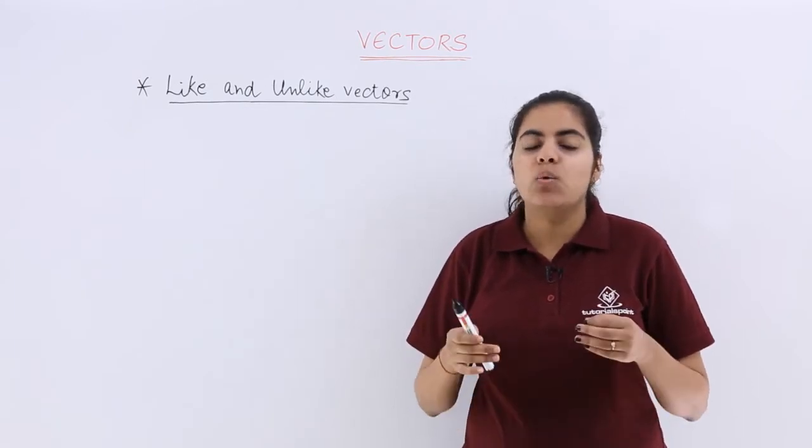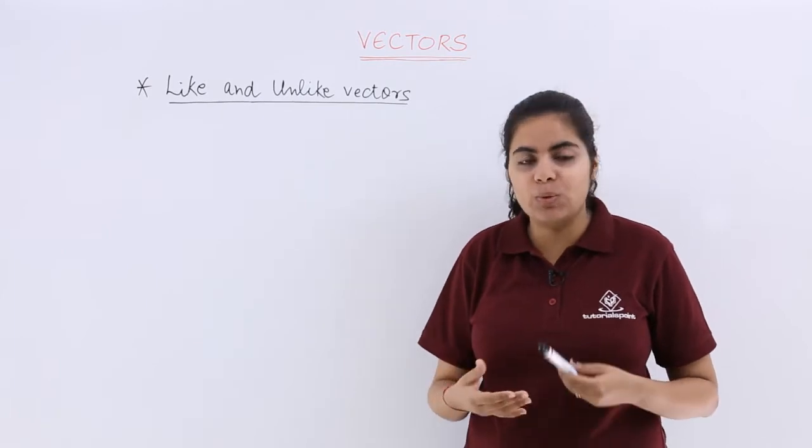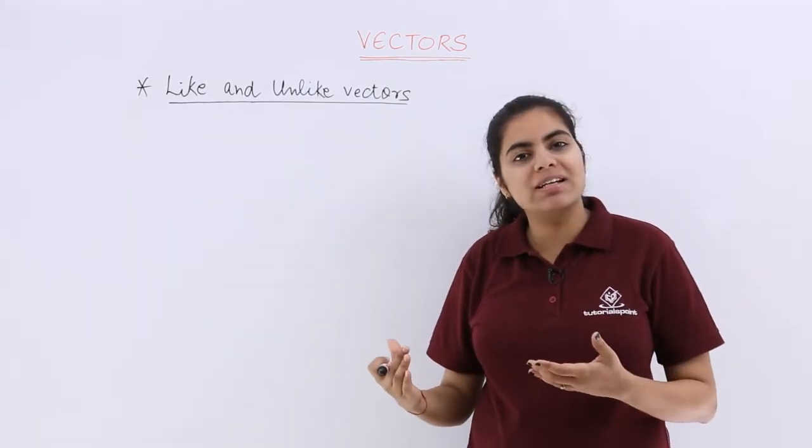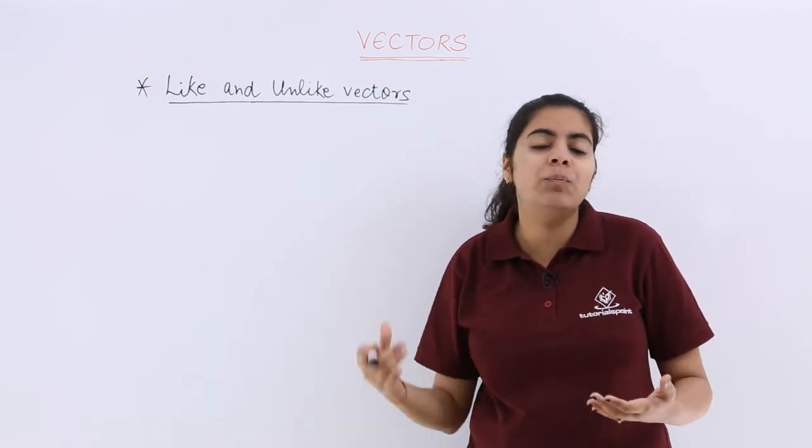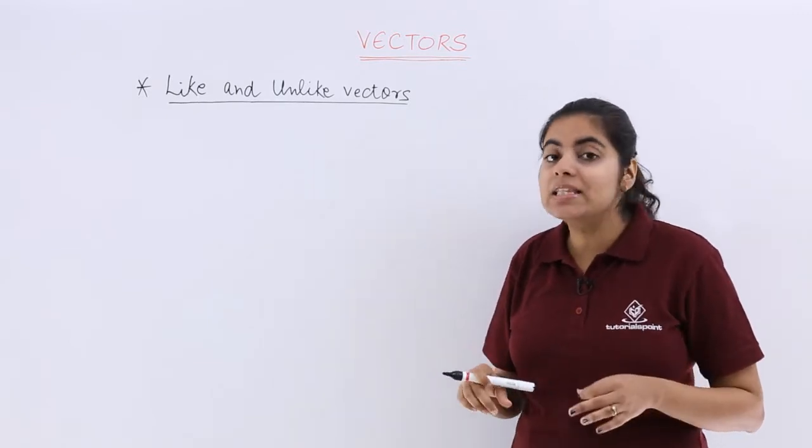Those vectors which have the same direction or the same sense of support are said to be like vectors, while those vectors which have opposite direction or opposite sense of support are called unlike vectors.